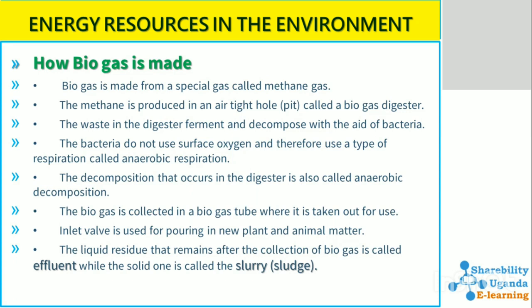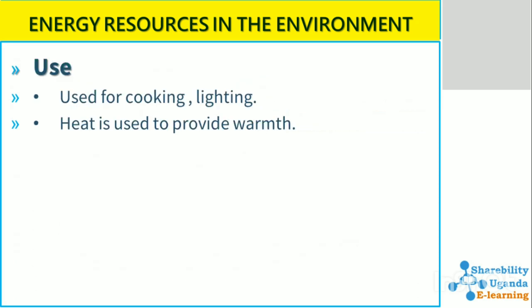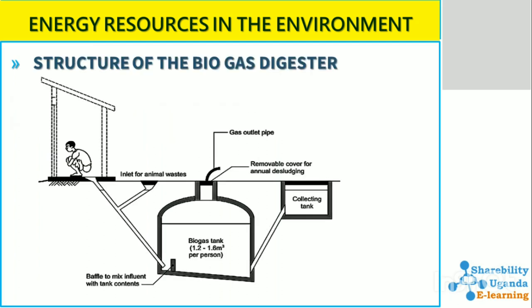The digester has an inlet valve used for pouring in new plant matter. The liquid residue that remains after the collection of biogas is called the effluent, and the solid is called the sludge. Biogas is used for cooking, lighting, and providing heat to warm us. You can pause the video to look at the structure of a biogas digester.